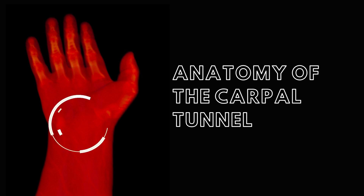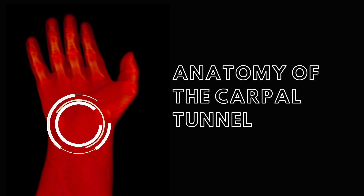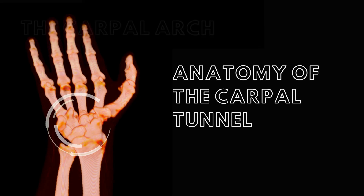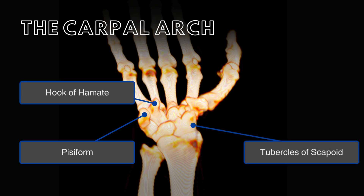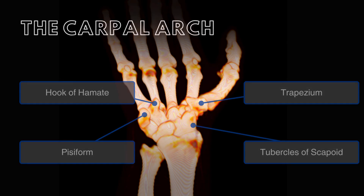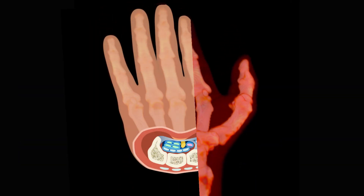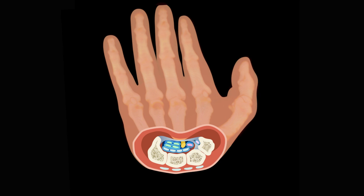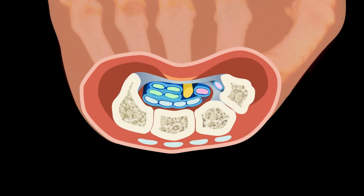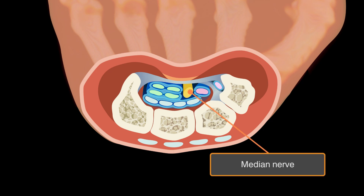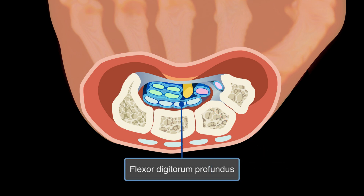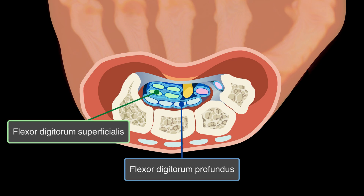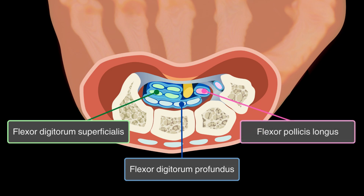The carpal tunnel lies on the anterior aspect of the wrist and the flexor retinaculum. The carpal arch is formed by the pisiform, the hook of the hamate, and the tubercles of the scaphoid and trapezium. This combined structure of carpal bones and thick ligament bridge creates the carpal tunnel, which serves as the passageway for the median nerve and nine tendons: the four tendons of the flexor digitorum profundus, the four tendons of the flexor digitorum superficialis, and the single tendon of the flexor pollicis longus.